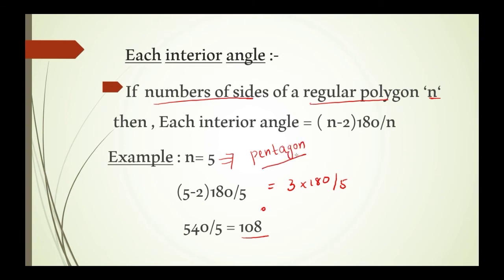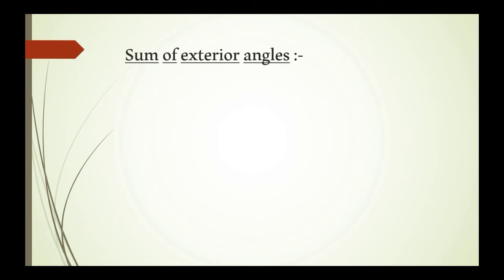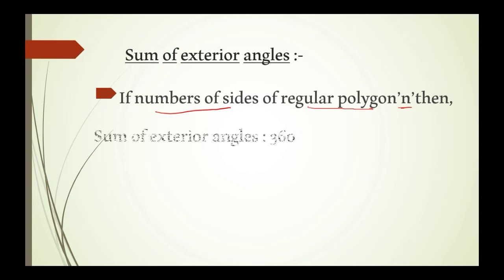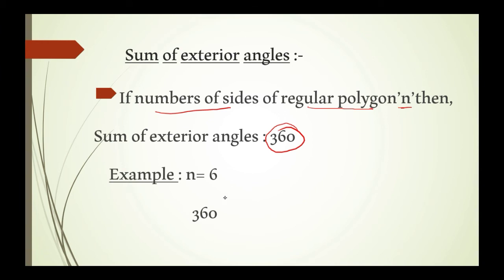Next formula: sum of exterior angles. We have learned about interior angles. Now, for the sum of exterior angles — for each and every polygon, the sum of exterior angles is 360 degrees. For example, if you take n equals 6, or whatever polygon you take, the sum of exterior angles is always 360 degrees.